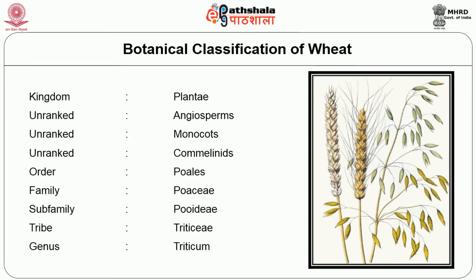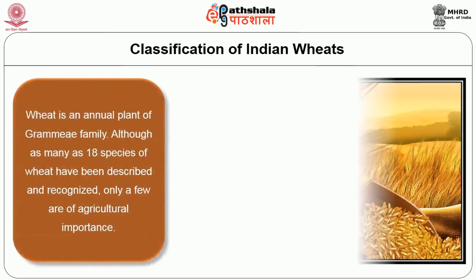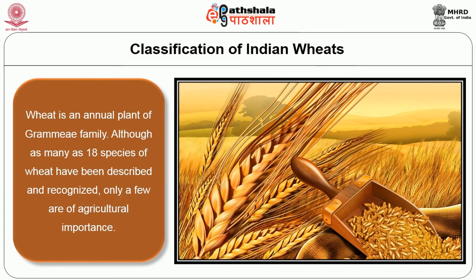Now let us see the botanical classification of wheat. Wheat belongs to the kingdom Plantae, unranked as angiosperms, order is Poales, it belongs to the family Poaceae, tribe Triticeae and the genus Triticum.